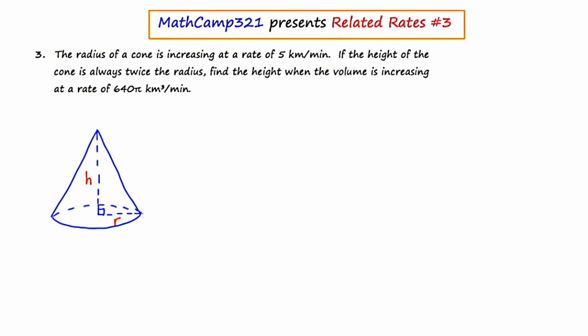Now I want to generate a list of the things that I know and the things that I'm trying to find. It says in the first sentence that the radius of the cone is increasing at a rate of 5 kilometers per minute. So over time this radius is changing. So I'm going to say dr/dt is equal to 5 kilometers per minute.